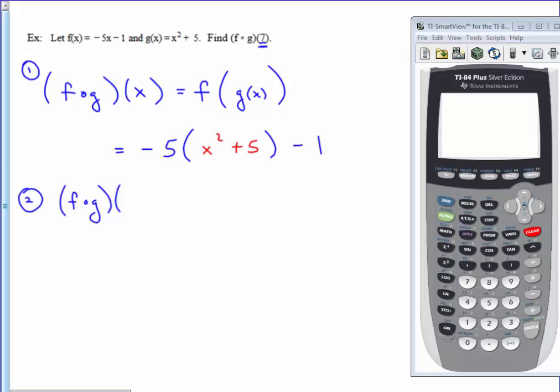They've asked me to perform f composed of g at 7, and so I will use this formula as my recipe, and everywhere there is an x, substitute 7. So I have negative 5 times 7 squared plus 5, and then minus 1.